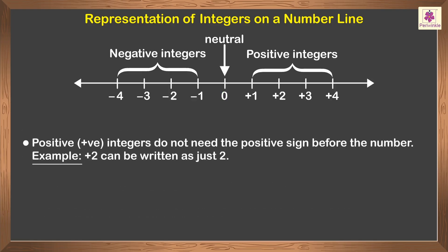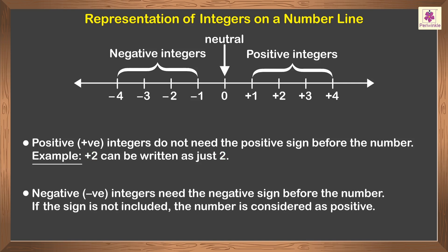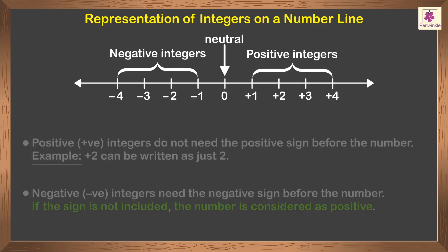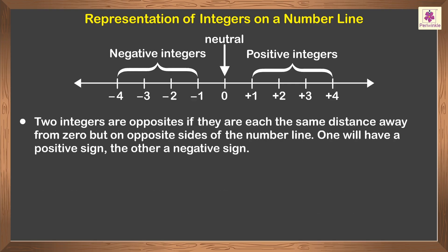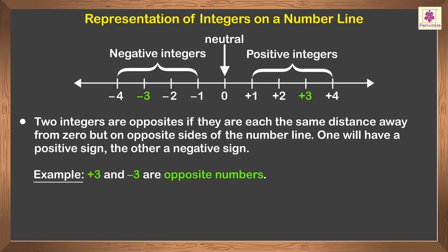Positive integers do not need the positive sign before the number. For example, positive two can be written as just two. Negative integers need the negative sign before the number; if the sign is not included, the number is considered positive. Two integers are opposites if they are each the same distance away from zero but on opposite sides of the number line — one will have a positive sign, the other a negative sign. In the number line shown here, positive three and negative three are opposite numbers.